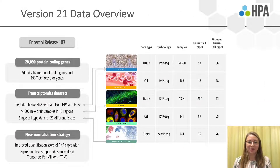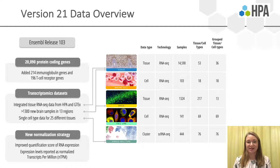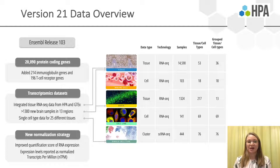The new version 21 of the Human Protein Atlas is based on the Ensembl release 103, mapping 20,090 genes, with immunoglobulin genes and T cell receptor genes now added. We have made major changes to the transcriptomics data sets: for the tissue data we integrate our internal HPA RNA-seq data with GTEx data and added several new tissues. There is a major update in the brain data set with RNA-seq data from more than 1,300 human samples, integrated with the tissue data, and a much larger number of tissues with single cell RNA-seq data. We now report RNA expression levels as normalized transcripts per million, or NTPM, using a new normalization pipeline.